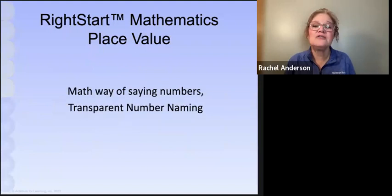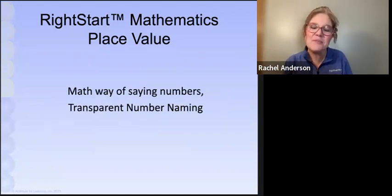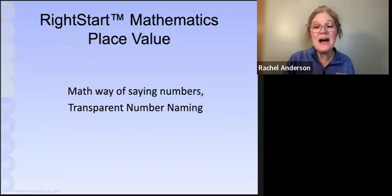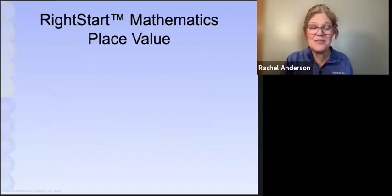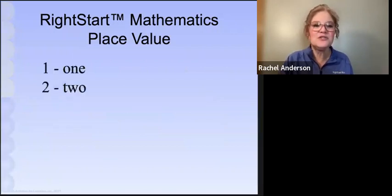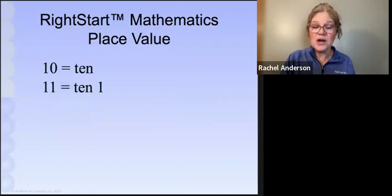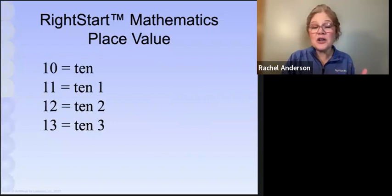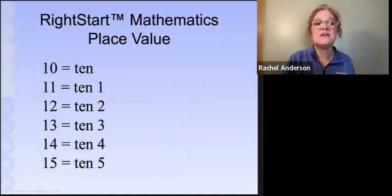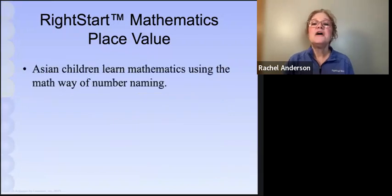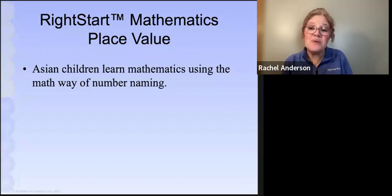So Right Start Math has the child temporarily, temporarily, so don't freak out, temporarily learn the math way of saying numbers, also known as the transparent number naming. Basically, it calls the number by its place value. So let me count that for you. The first part is very similar. It's just like the regular way of saying numbers, 1, 2, 3, 4, 5, 6, 7, 8, 9. Then we get into tens. 1 ten, 1 ten 1, 1 ten 2, 1 ten 3. We're talking the place value. We could even say 1 ten 1, so we're saying how many tens there are in the tens place. And then we go all the way up through 9 ten 9.